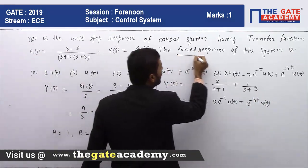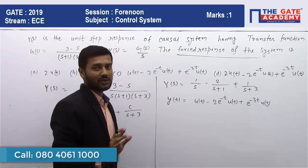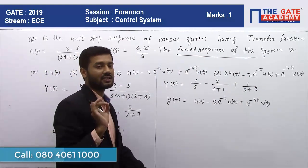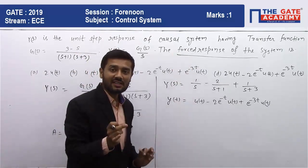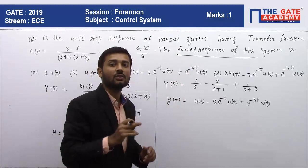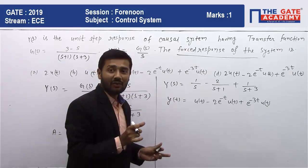What is forced response? There are two responses of any system: first one is transient and second one is steady state response. The transient is nothing but the natural response which goes to zero as time t tends to infinity, but the second one is forced response and that is nothing but the steady state response.